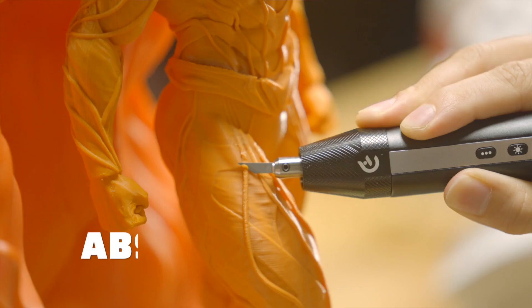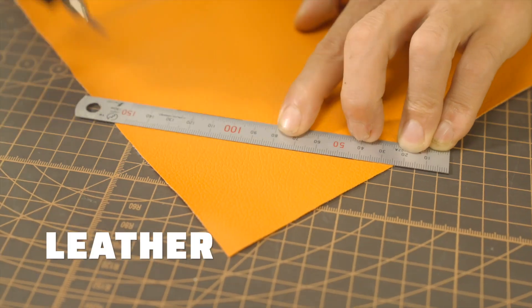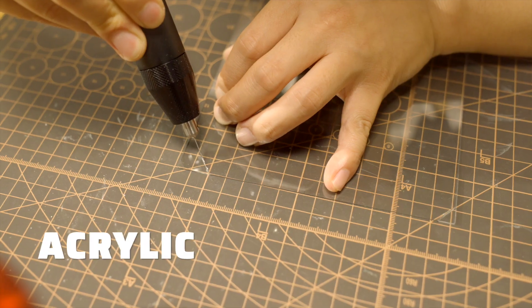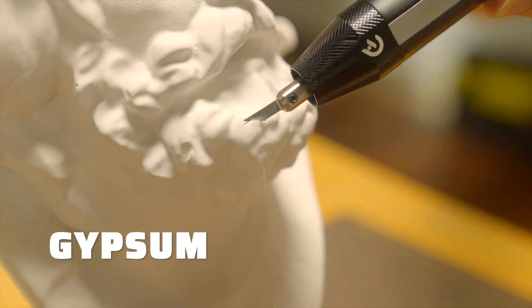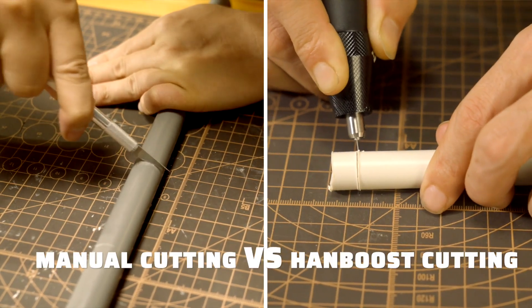From trimming PLA, ABS, plastic models, leather, PVC, paper cutting, wood slicing, acrylic, rubber, gypsum, or PCB, it consistently delivers the precision you need.